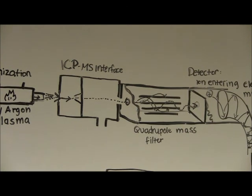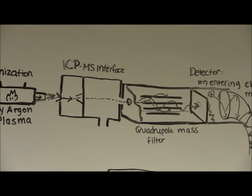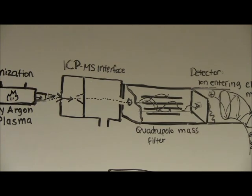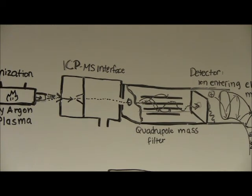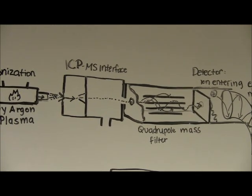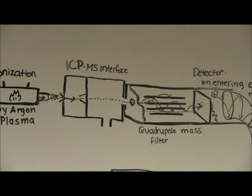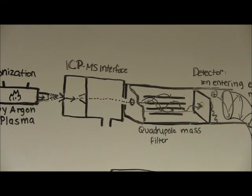In order to most efficiently reduce the pressure, several pumps are typically used to gradually decrease the pressure to 10 to the negative 5 millibar before the ion stream reaches the quadrupole. If only one pump were used, its size would be excessive to reduce the pressure immediately upon entering the mass spectrometer.